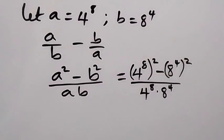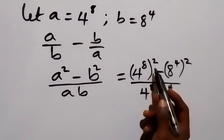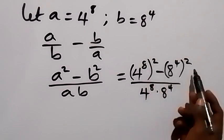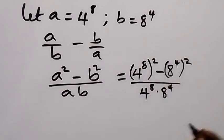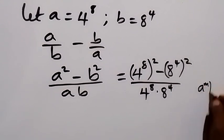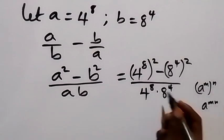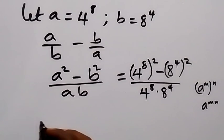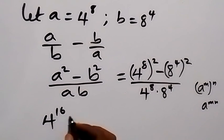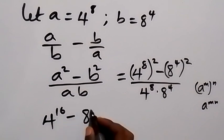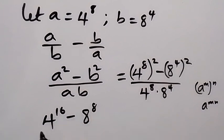By the time we solve this, we can use the power law to multiply. From the law of indices, a raised to power m times n gives a raised to power m×n. So multiplying from there, that becomes 4 raised to power 16 minus 8 raised to power 8, divided by 4 raised to power 8 times 8 raised to power 4.